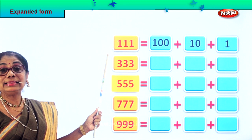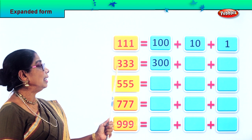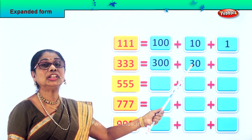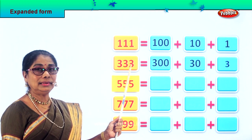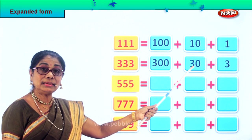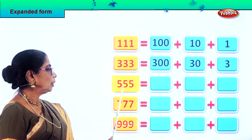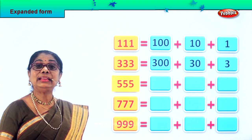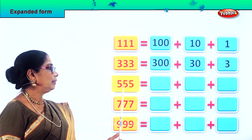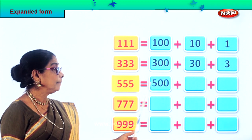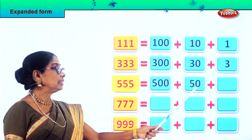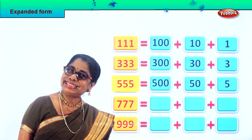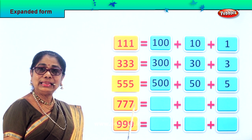Next number: 333 — three ones, three tens, three hundreds. So 333 equals three hundred plus thirty plus three. And similarly, 555 — five in the ones place, five in the tens place, five in the hundreds place. So 555 equals five hundred plus fifty plus five.